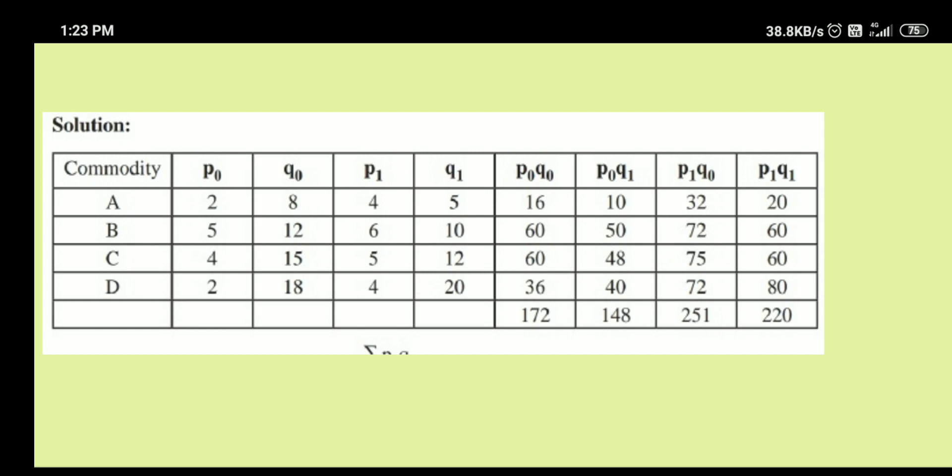Last one, P1 and Q1. That is nothing but the multiplication between P1 and Q1. 4 into 5, 20. 6 into 10, 60. In the same manner, you multiply all the numbers and get the totals.